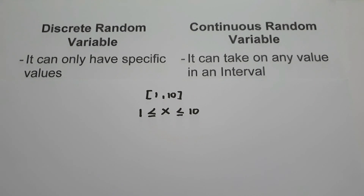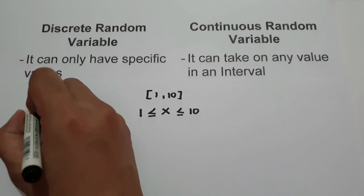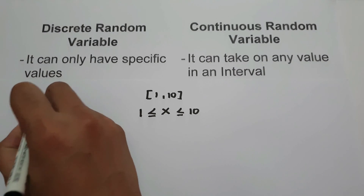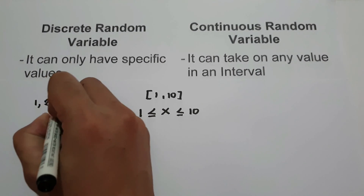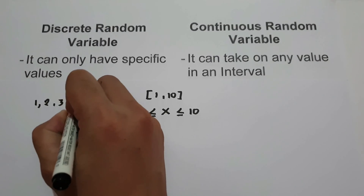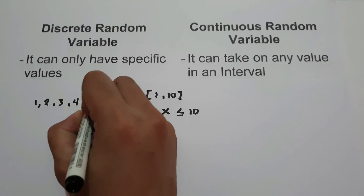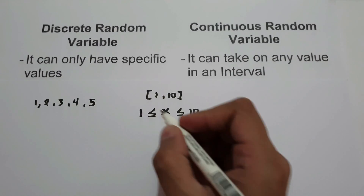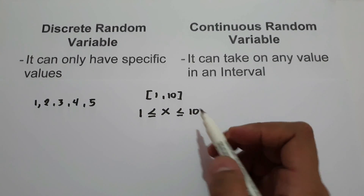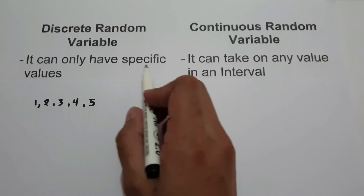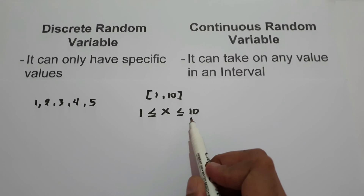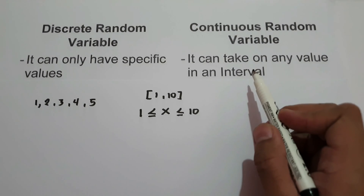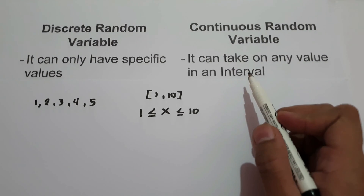In a discrete random variable, the value of x can be 1, 2, 3, 4, 5, etc. It can only have a specific value between 1 to 10.